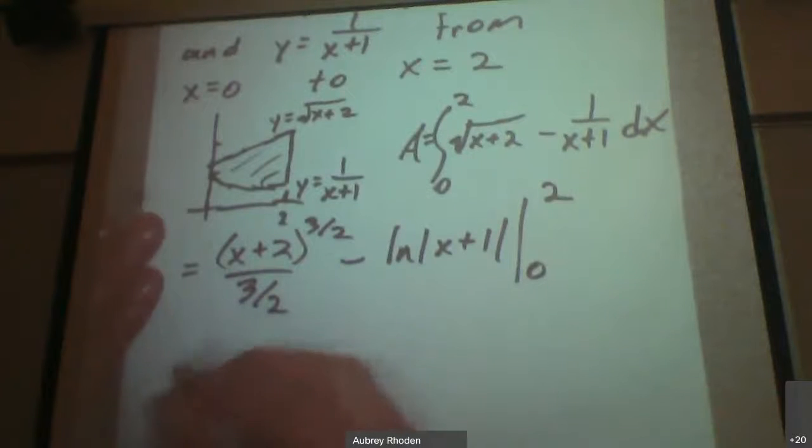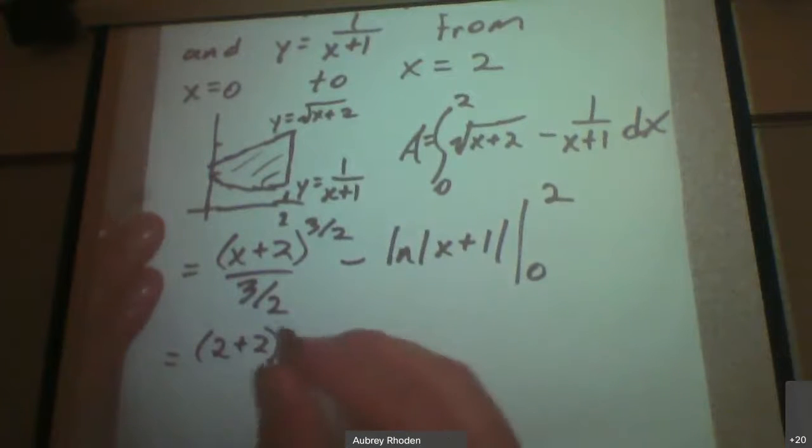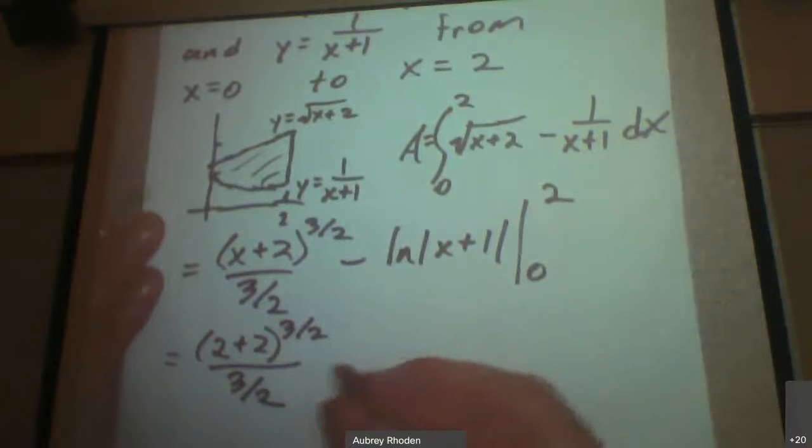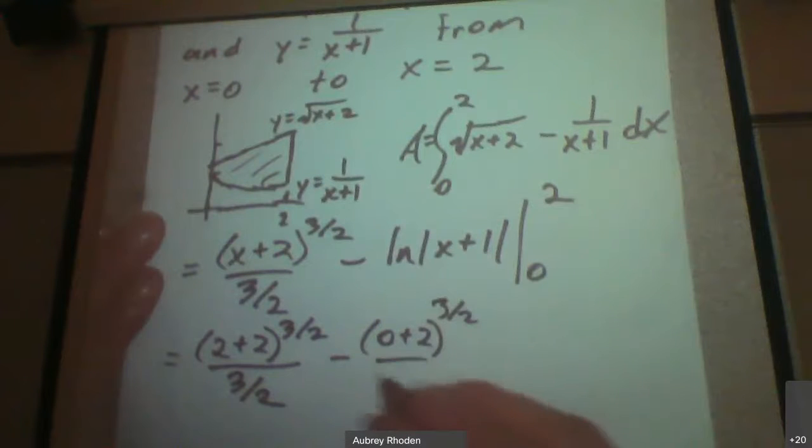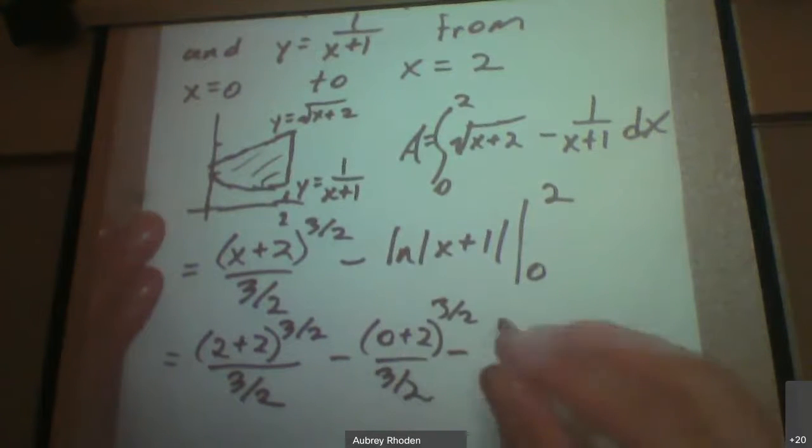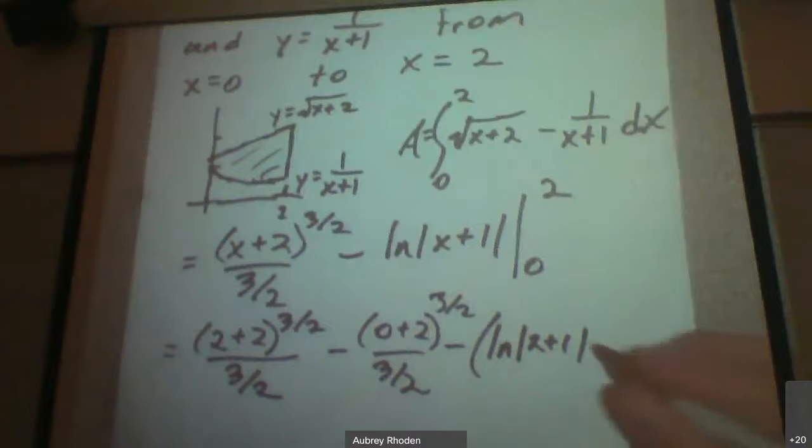Okay, so that becomes two plus two raised to the three divided by two divided by three divided by two minus zero plus two to the three divided by two divided by three divided by two. And then minus, let's do this with parentheses, the natural log of two plus one and minus the natural log of zero plus one.